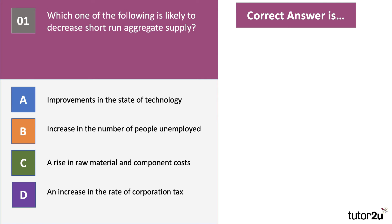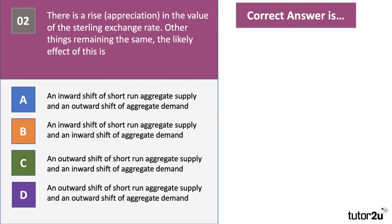Which of options A, B, C, and D is going to decrease short run aggregate supply? The answer is C — an increase in raw material and component costs. For example, in the building industry, rising costs of cement and bricks, or in bottled water, rising plastic prices. Option D, an increase in corporation tax, is not a tax on costs and does not affect short run aggregate supply. Increased unemployment would reduce demand rather than supply, and improvements in technology would cause an outward shift in long run aggregate supply.